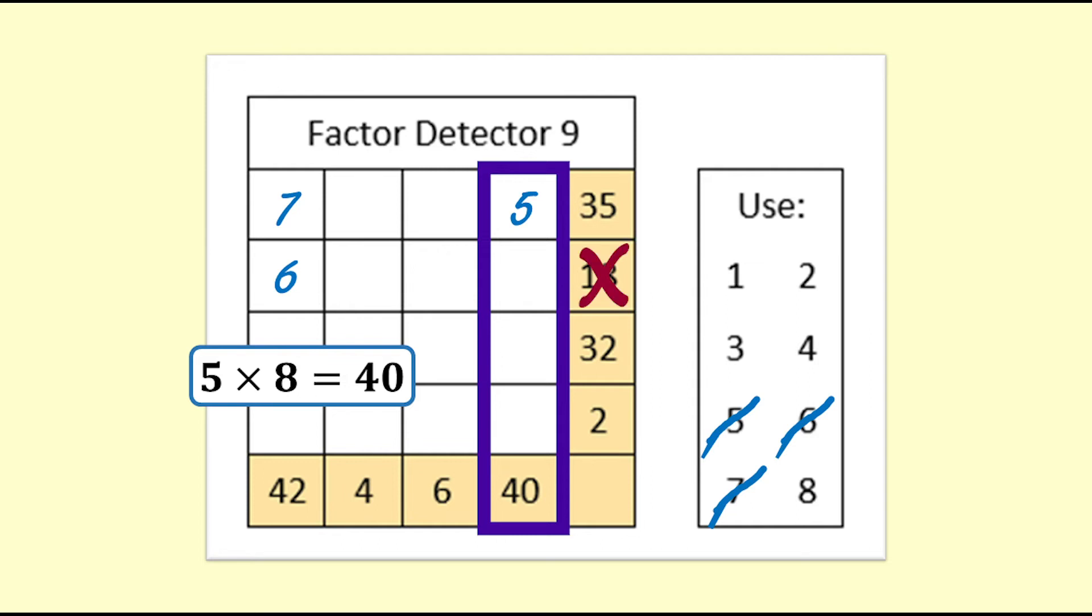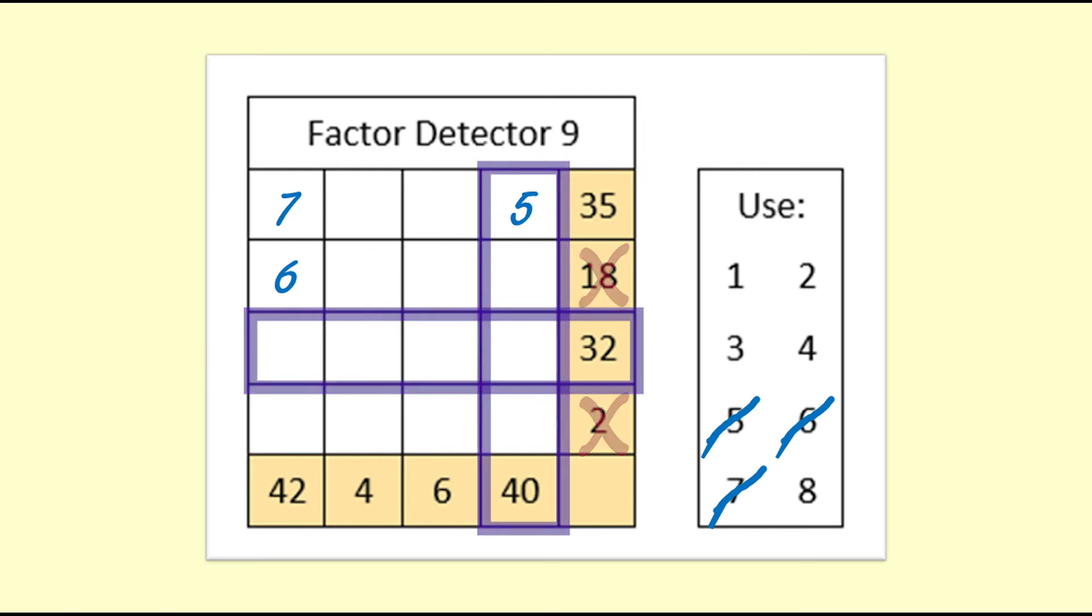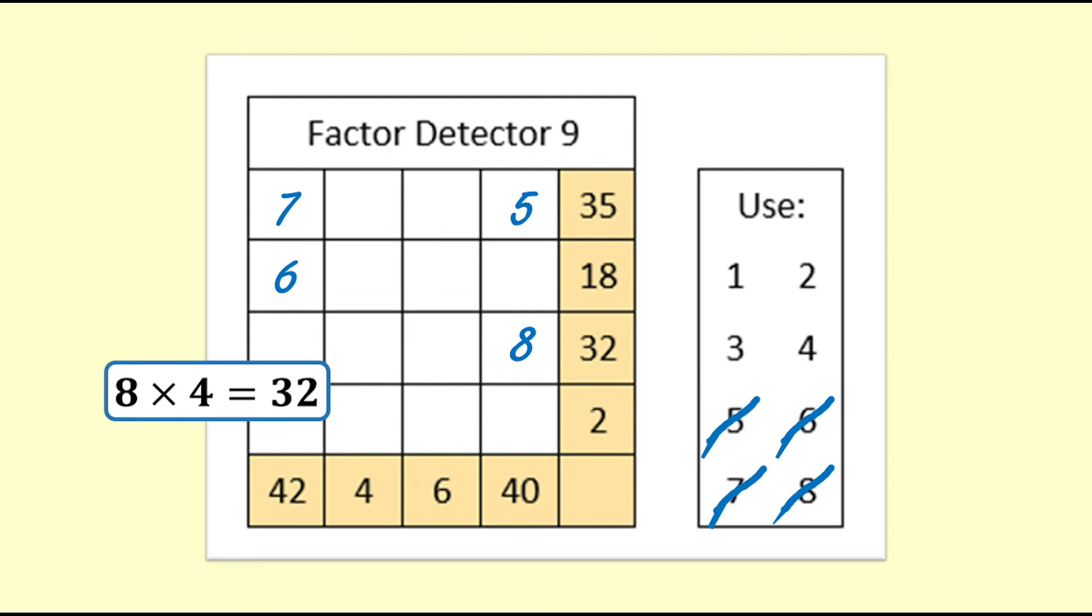8 does not go into 18 or into 2, but 8 does go into 32, so that is where I will put it. Cross off the 8. 8 times 4 is 32, so we're now going to need to put a 4 into the 32 row. And it will go over the 4 as 4 times 1 equals 4.